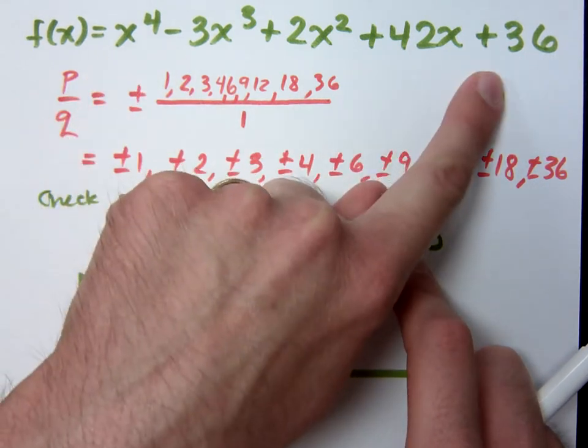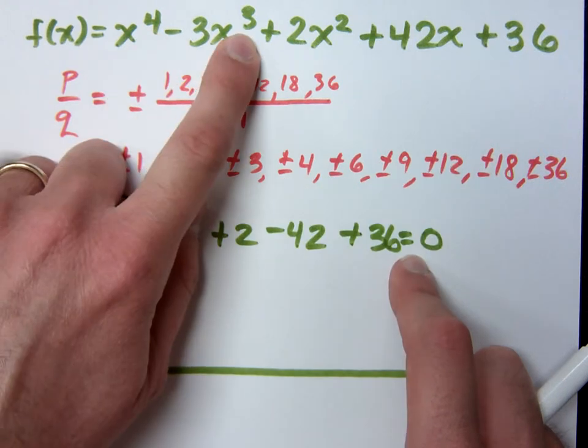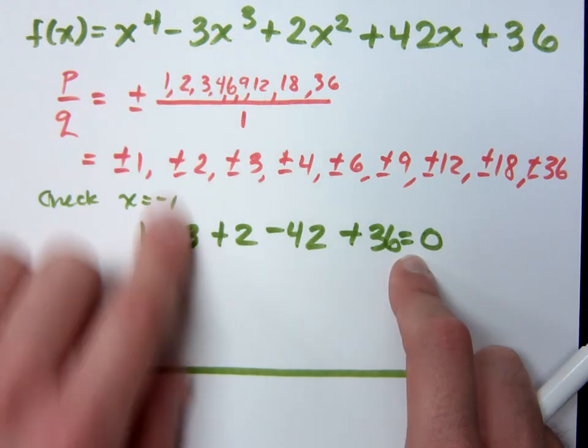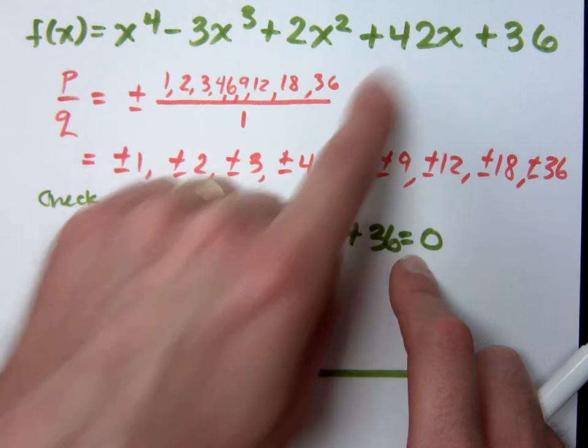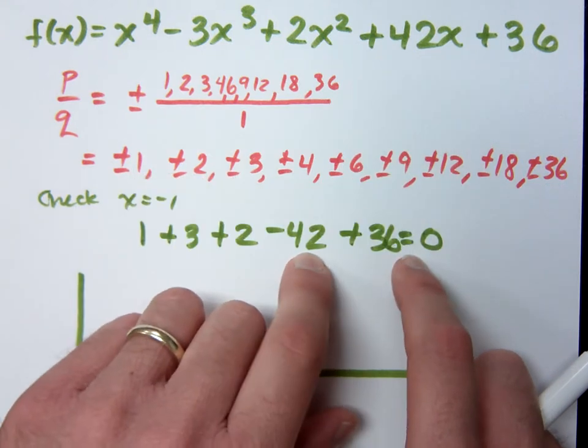When it's x equals negative 1, you add up the coefficients. However, if it's an odd degree, you do the opposite of the sign you see. Odd degree.